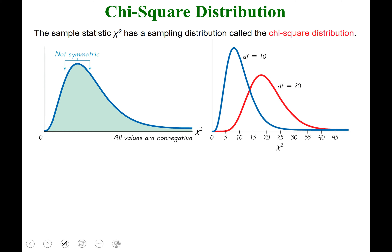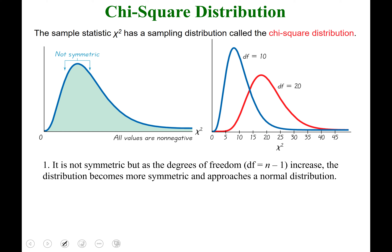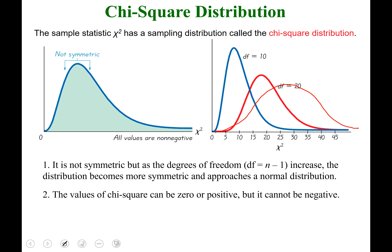To summarize: number one, the chi-squared distribution is not symmetric, but as the degrees of freedom (df = n − 1) increase, the distribution becomes more symmetric and approaches a normal distribution. Number two, the values of chi-squared can be zero or positive but cannot be negative — meaning it all takes place in the first quadrant.